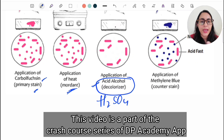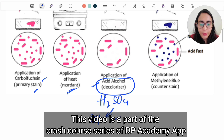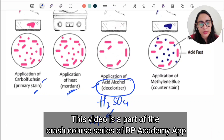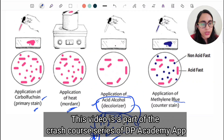The decolorizer for acid fast staining is basically sulfuric acid, and the percentage of sulfuric acid varies. For example, you can use 20 percent sulfuric acid for Mycobacterium tuberculosis, 5 percent for Mycobacterium leprae, and 1 percent for Nocardia. These are the percentages of acid used for acid fast staining.